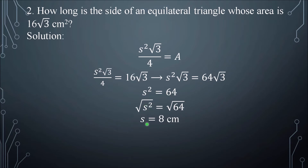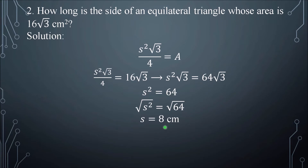Square root of s² is s, and the square root of 64 is 8. Take note: √64 has two roots, 8 and negative 8, but we will only consider the principal root because we are talking about length. There is no negative length. So the side of the equilateral triangle is 8 centimeters.